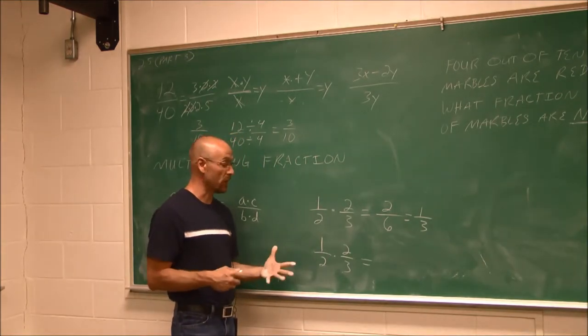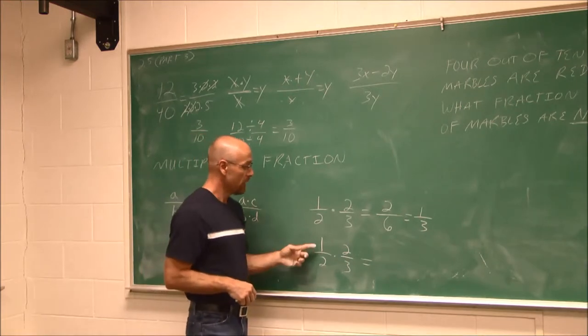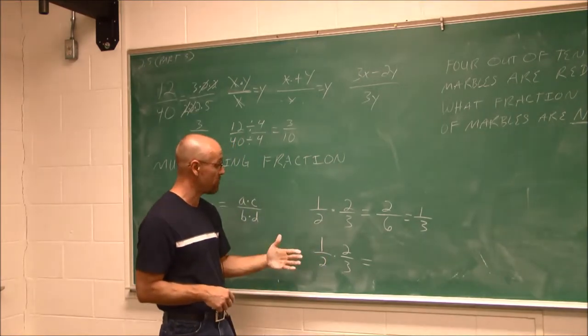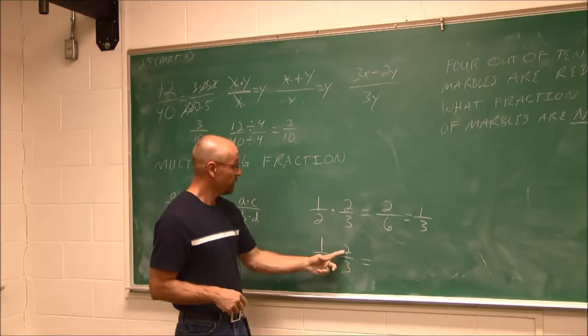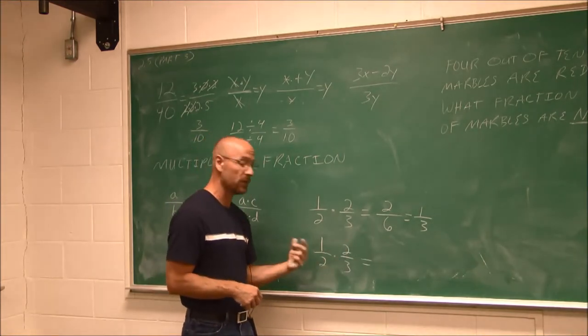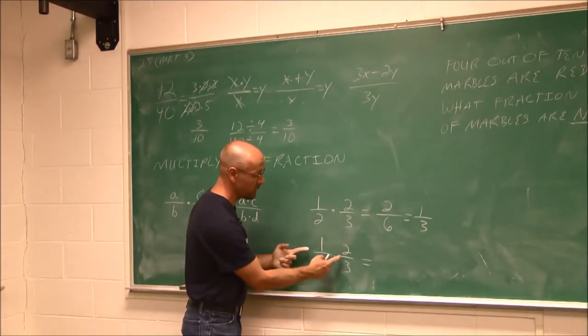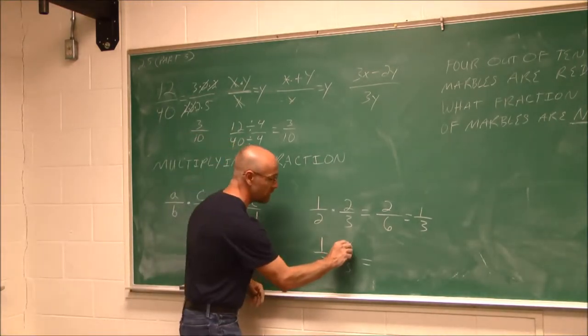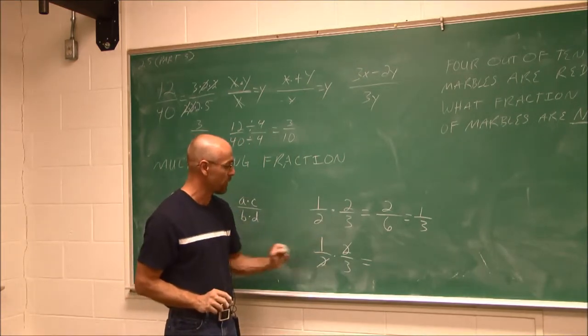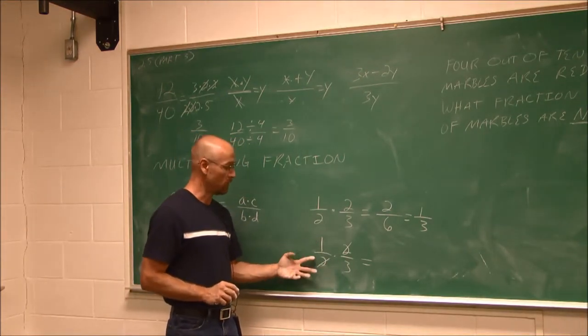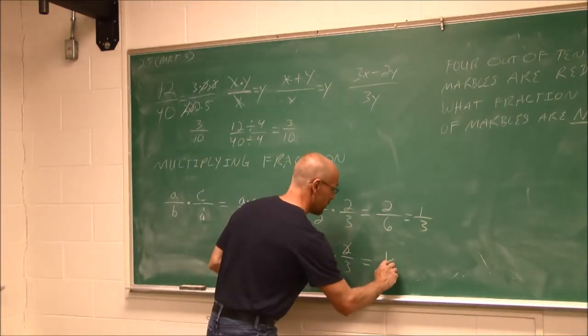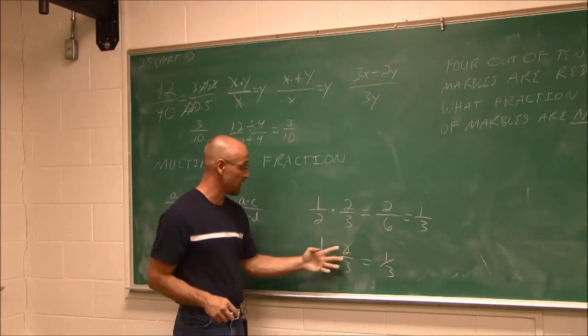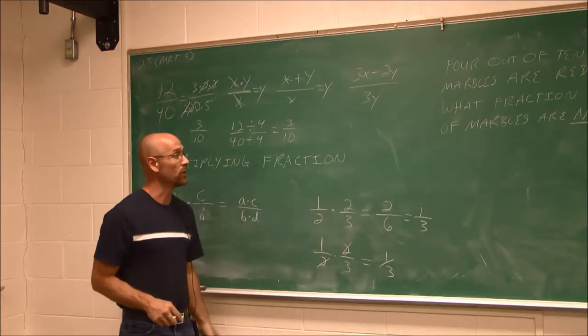Now I'm going to show you a nice tool that we can use that sometimes will help us tremendously. If we want to reduce before we do the multiplication, sometimes that can happen and it's very helpful. We can actually reduce across fractions because the only operations we have is multiplication and division. A 2 on top will cancel a 2 on the bottom, leaving me with 1 third times 1 over 1. 1 over 1 is 1. 1 times 1 third is 1 third. So reducing, I didn't have to deal with 2 sixths. I was able to reduce it first and then continue on to 1 third.